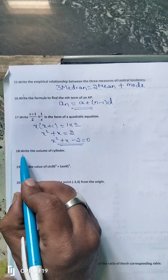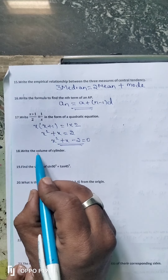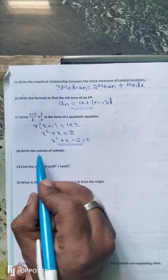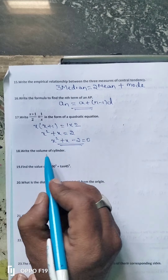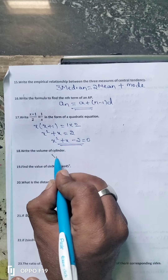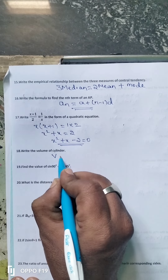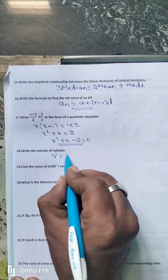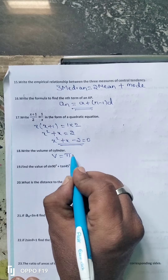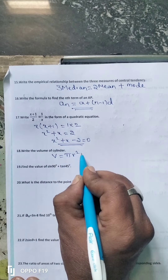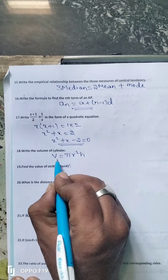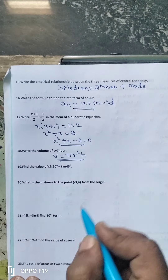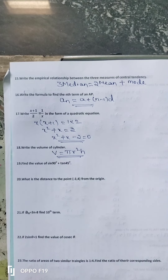Coming to the 18th question: Write the volume of a cylinder. The volume of a cylinder V is equal to pi r squared h. This is the formula to calculate the volume of a cylinder.